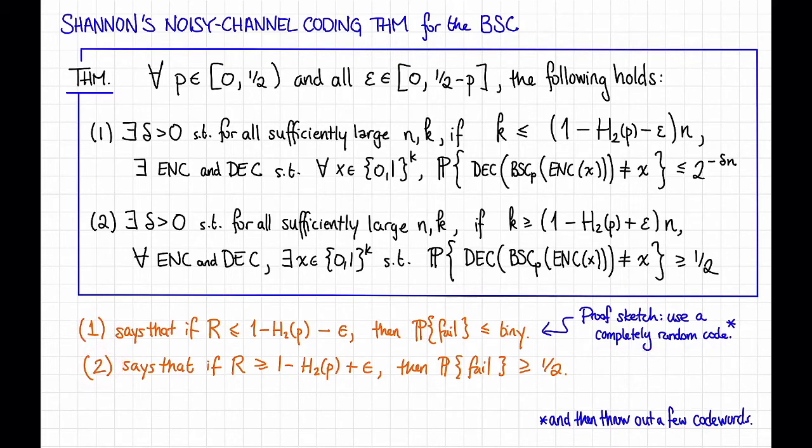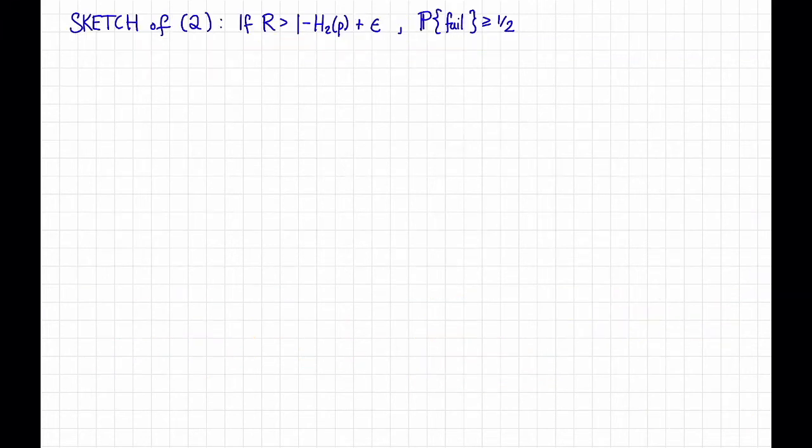Instead, let's talk a little bit about part 2. Part 2 is saying that if the rate is too big, then it doesn't matter what code you have, the probability that you fail on the binary symmetric channel has got to be pretty big. So let's sketch the proof of this second part. If the rate is too big, then the probability of failure must also be large. Actually, we're going to show the contrapositive, that if the probability of failure is too small, then the rate must also be small. Okay, so here's the basic idea.